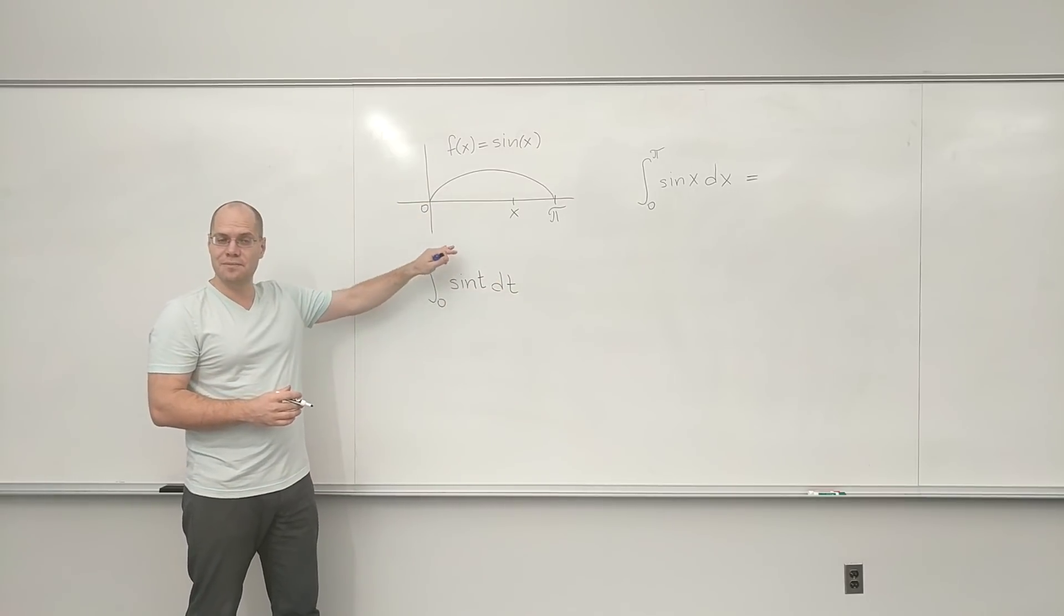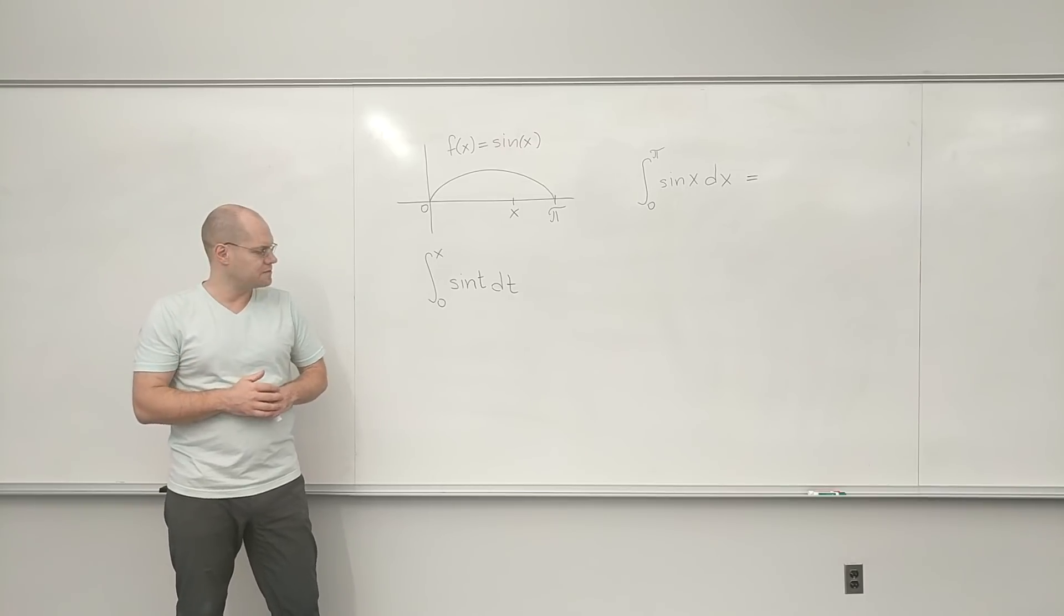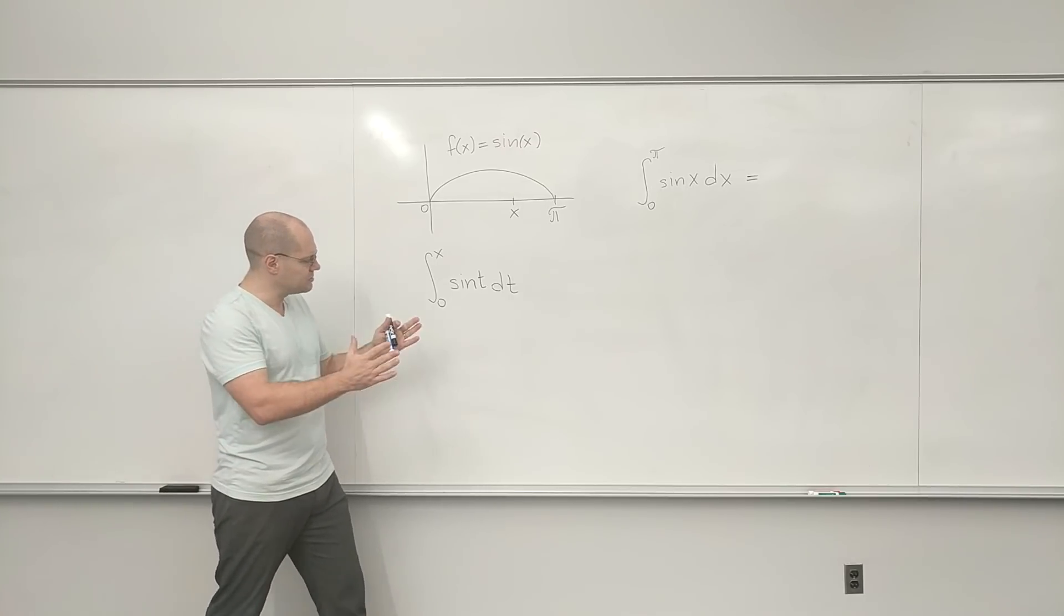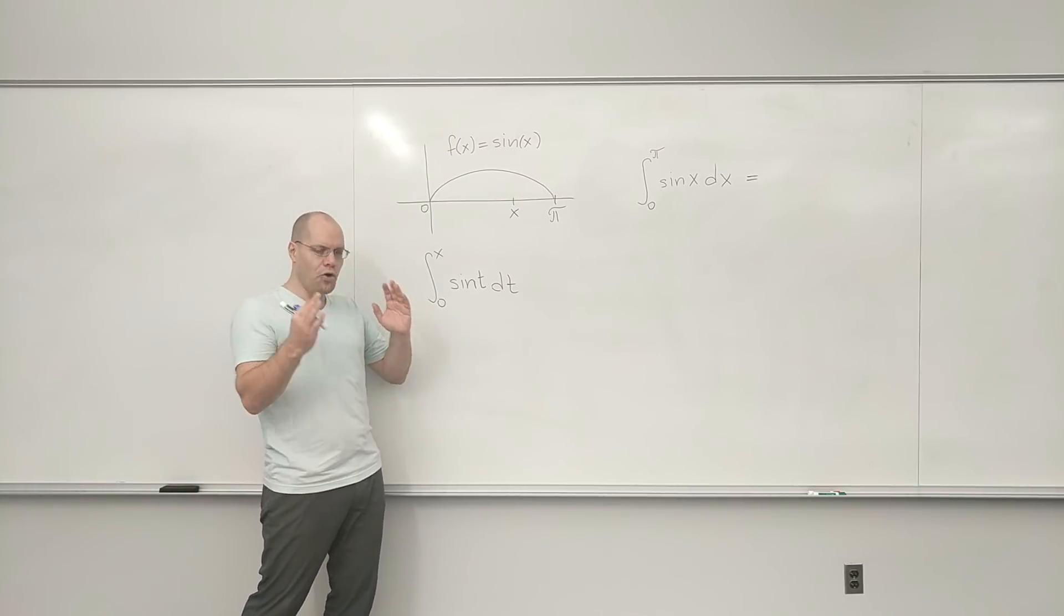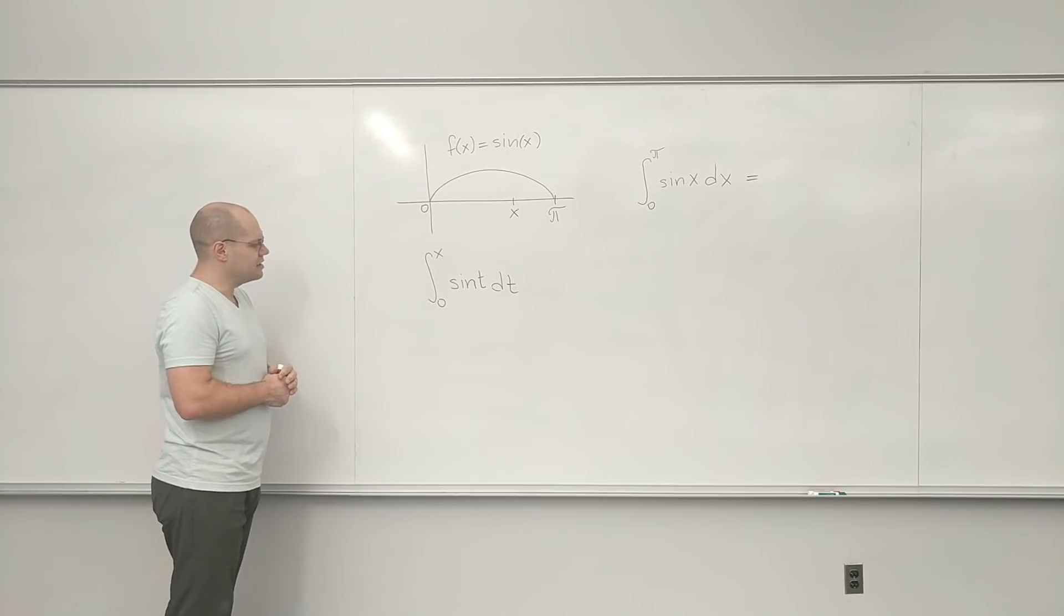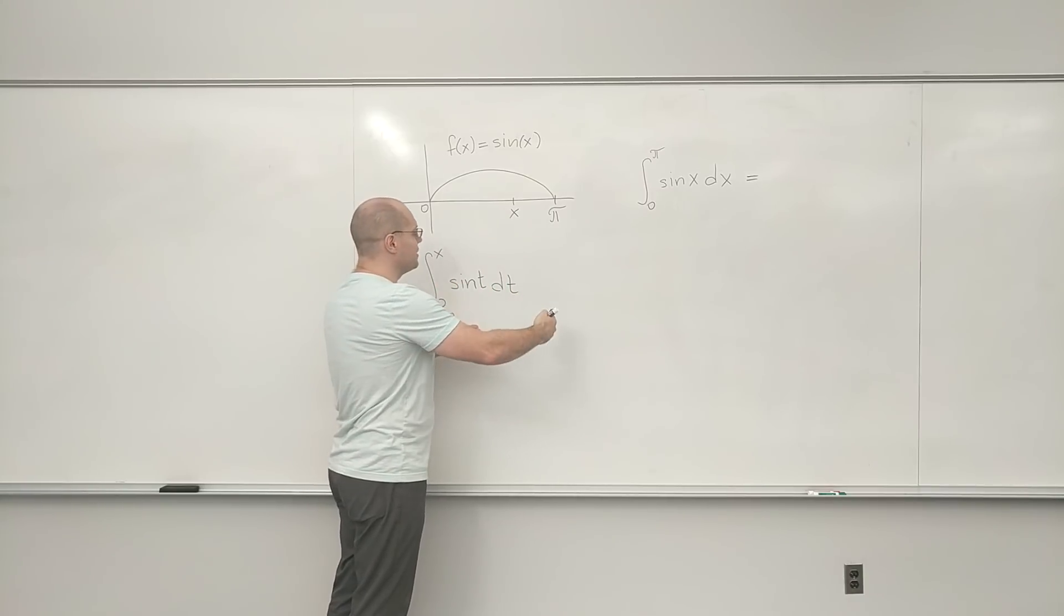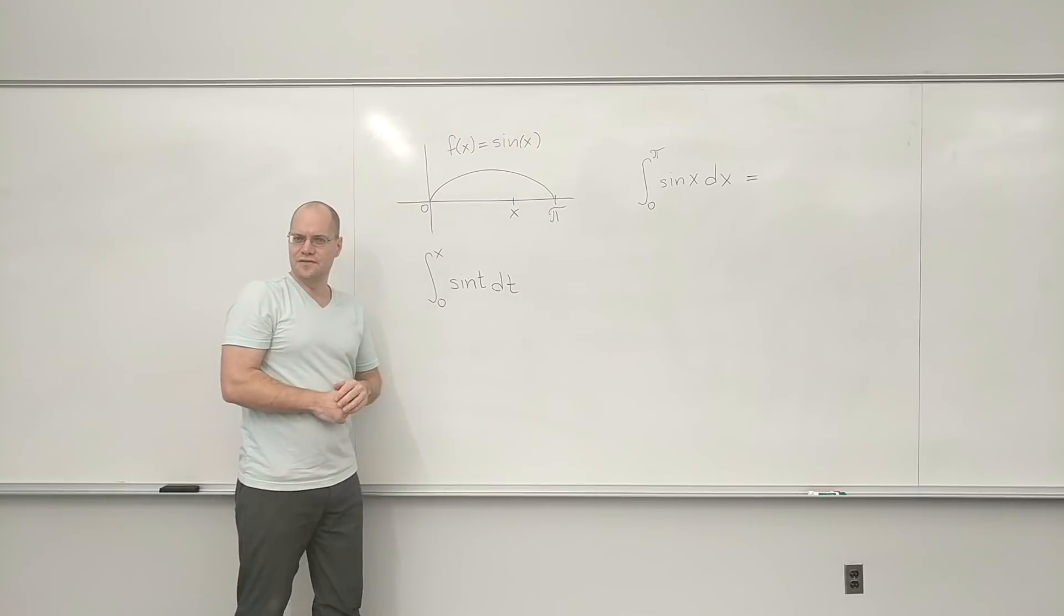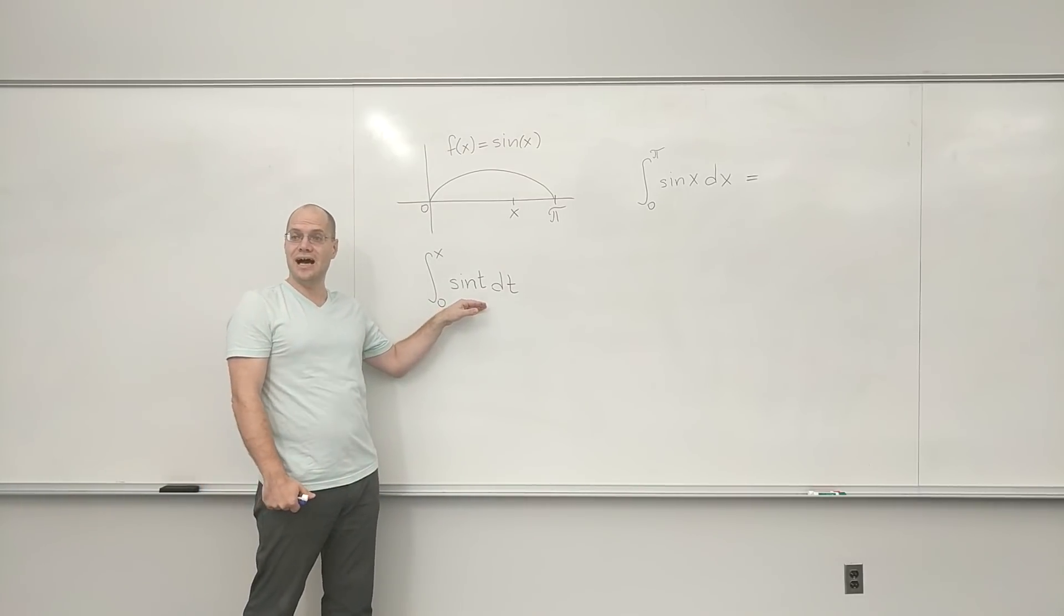Okay, so we know something about this function. We know two things about this function that will help us proceed with our analysis. Number one, and most importantly, and it was the whole point of yesterday's lecture, is that the derivative of this function, because this function represents area, and its derivative is the function itself. So the derivative of this function is sine of x, not of t.